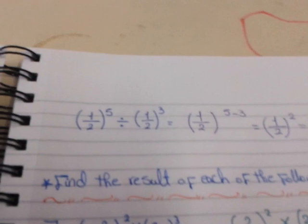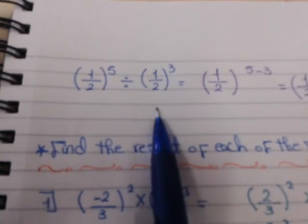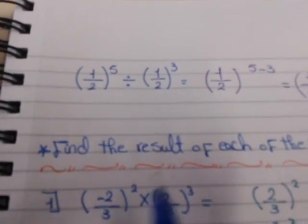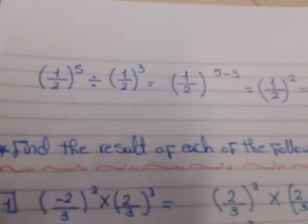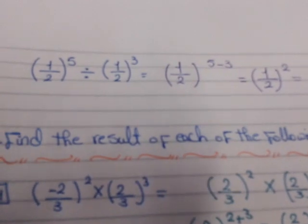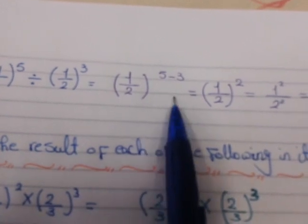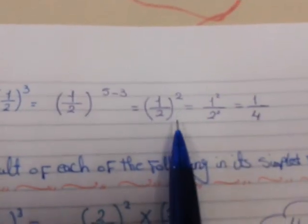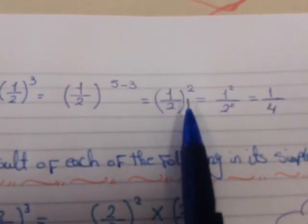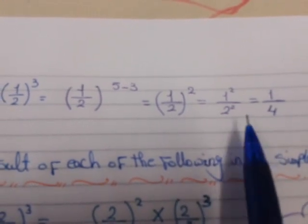We apply this rule to rational numbers. Here we divide the same fraction: (1/2)⁵ divided by (1/2)³. We take 1 over 2, then subtract the powers. Remember: subtract in division, add in multiplication. So (1/2)^(5−3) = (1/2)². Distribute the power 2: 1² over 2² equals 1 over 4.